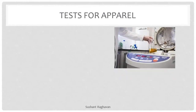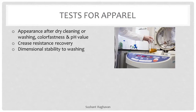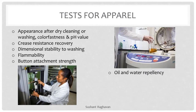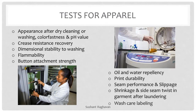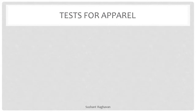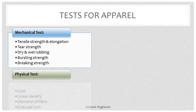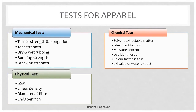Tests for apparel: appearance after dry cleaning or washing, color fastness and pH value, crease resistance recovery, dimensional stability to washing, flammability, button attachment strength, oil and water repellency, print durability, seam performance and slippage, shrinkage and side seam twist in garment after laundry, and wash care labeling. Mechanical tests: tensile strength and elongation, tear strength, dry and wet rubbing, bursting strength, breaking strength. Physical tests: GSM, linear density, diameter of fiber, ends per inch. Chemical tests: solvent extractable matter, fiber identification, moisture content, dye identification, color fastness test, pH value of water extract.